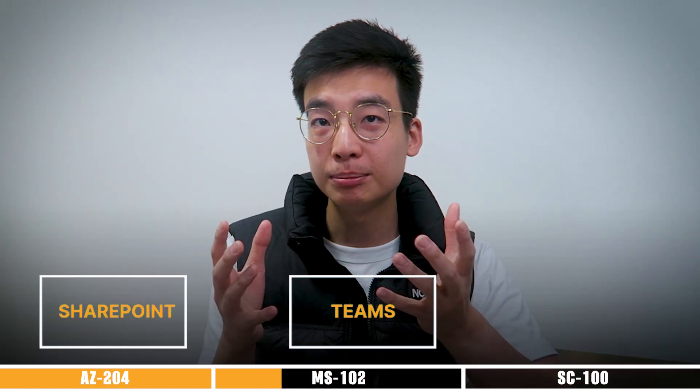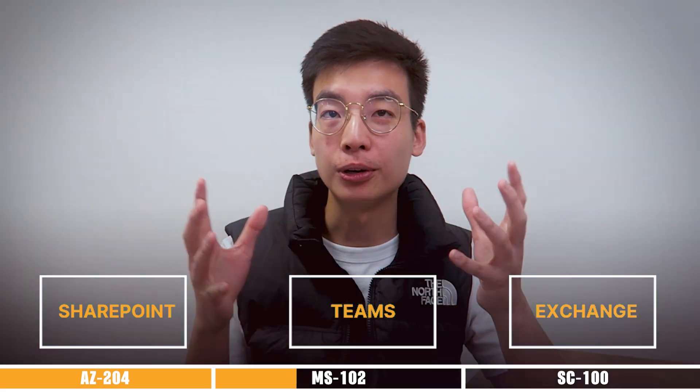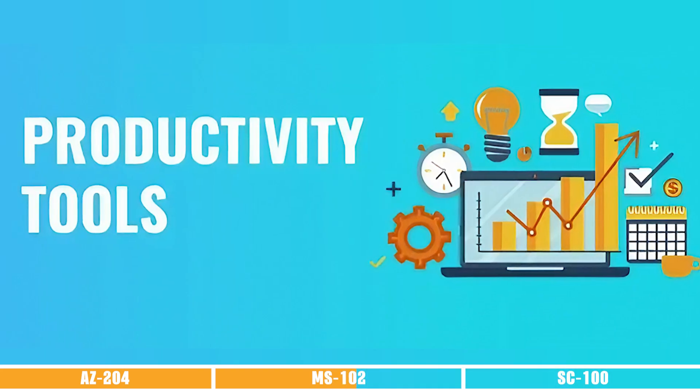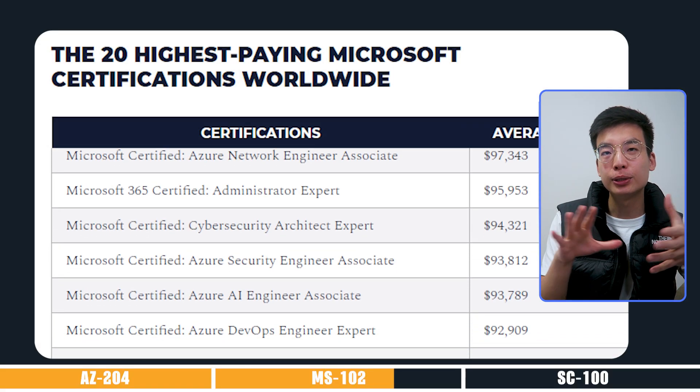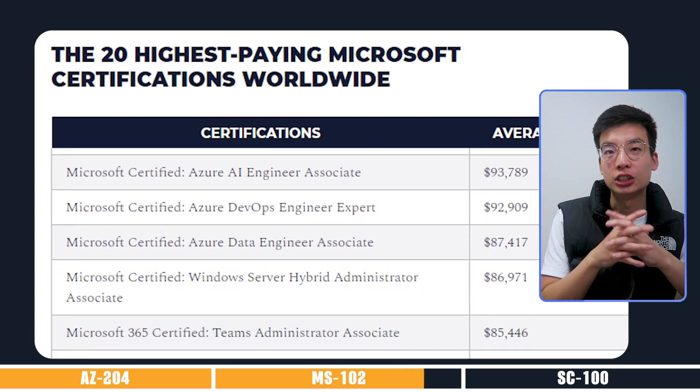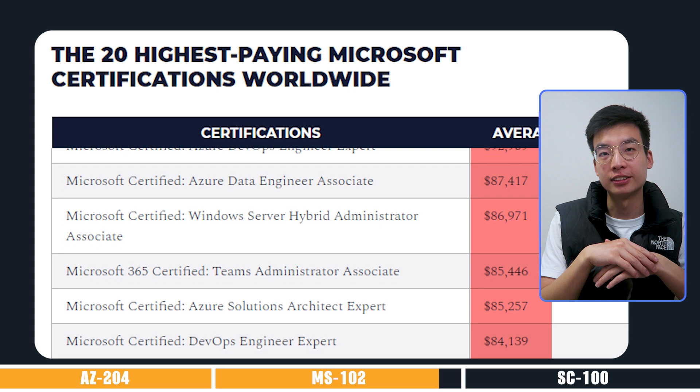MS-102 validates expertise in managing Microsoft 365 services, including SharePoint, Teams, Exchange, and more. As the way we collaborate evolves with hybrid and remote work, organizations seek administrators who can optimize productivity tools and ensure smooth operations. According to Skillsoft, the average US-based salary for individuals with this certification is just over $95,000.